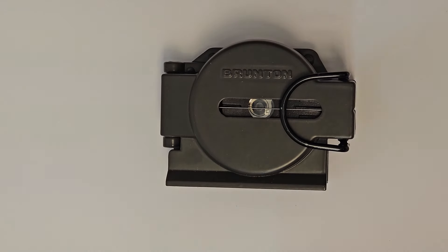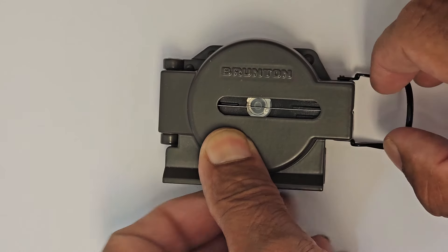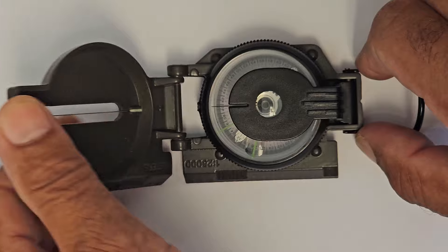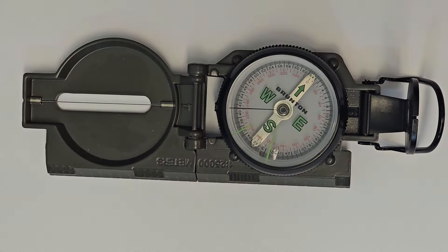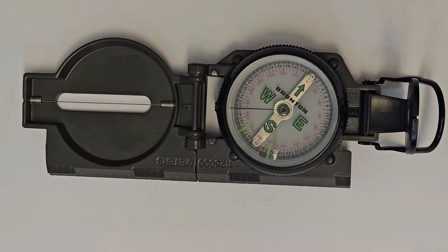This is the Brunson 9077 lensatic compass. So let's have a look around the compass. The compass folds open with the sight line in the lid, the main body, the lens holder and the thumb loop.